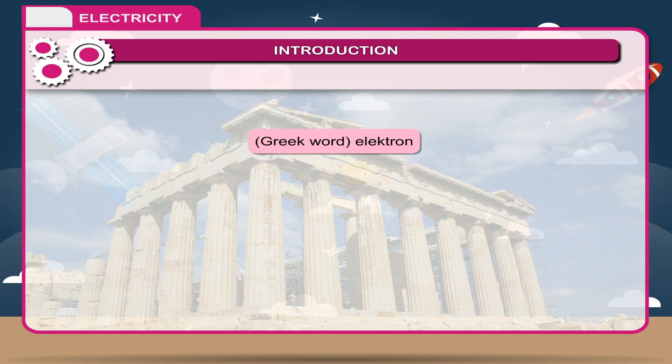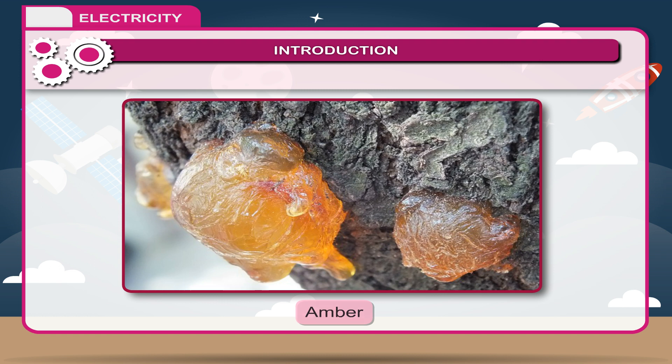The word electricity is derived from the Greek word 'electron', which means amber — a kind of resin provided by certain plants.